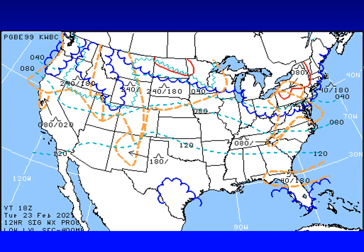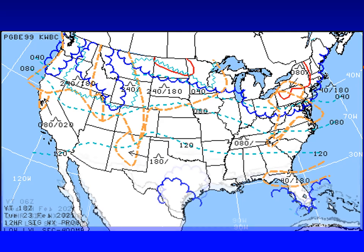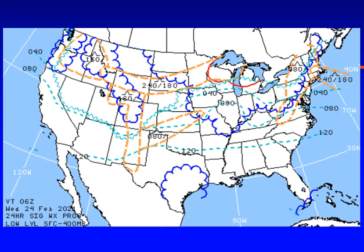Here are examples of the Low-Level Significant Weather Prognostic Chart showing areas of turbulence, IFR and MVFR weather, and freezing levels. This chart is valid at 18 Zulu on February 23rd, 2023, and is a 12-hour forecast. The 24-hour forecast looks very similar but has different times — for example, valid at 06 Zulu on Wednesday, February 24th. It indicates this is a 24-hour forecast of significant weather for the low level, meaning from the surface up to 400 millibars, which is 24,000 feet.